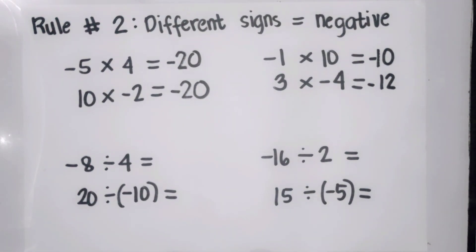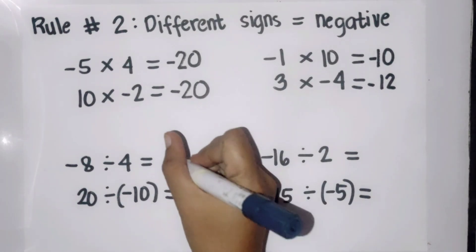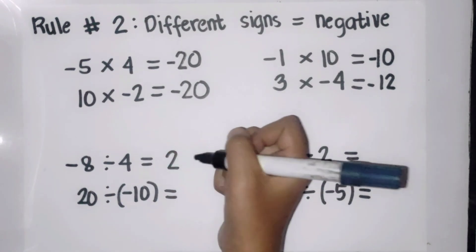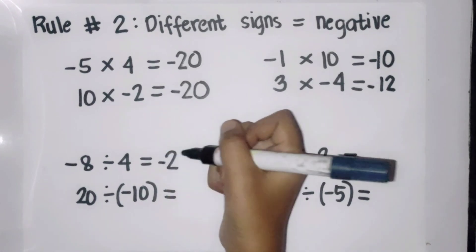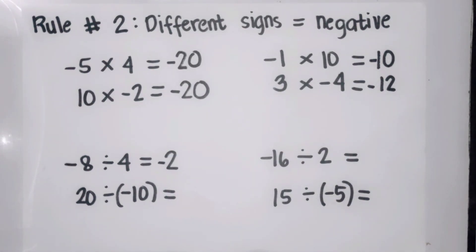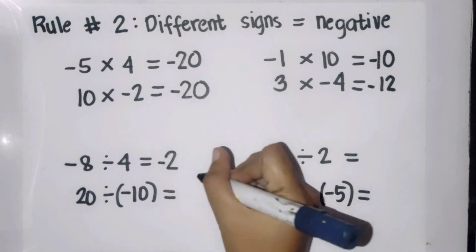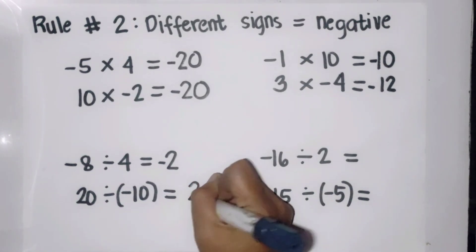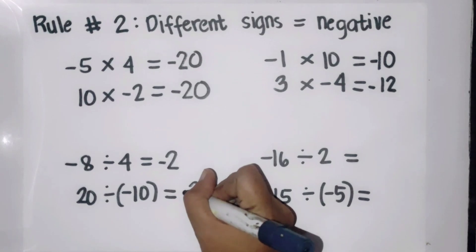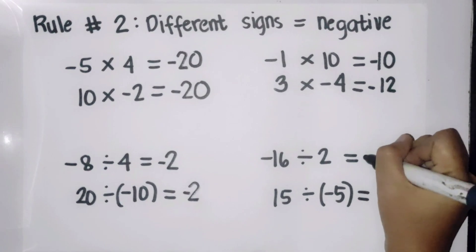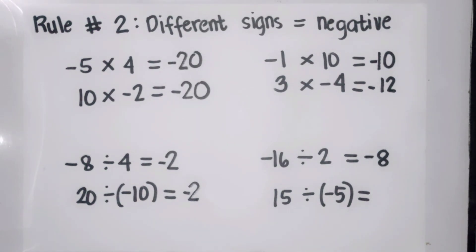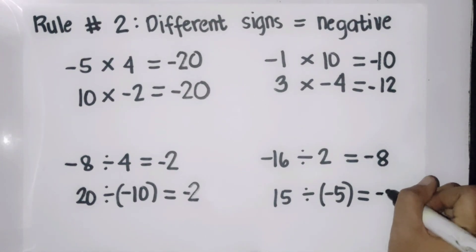Division examples with different signs: negative eight divided by four — eight divided by four is two, and since eight is negative and four is positive, the answer is negative two. Twenty divided by negative five is negative four. Negative sixteen divided by two is negative eight. And fifteen divided by negative five is negative three.